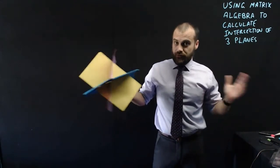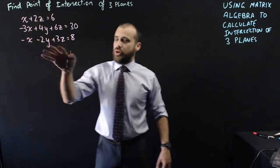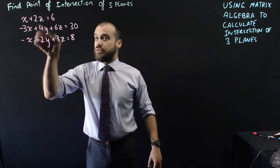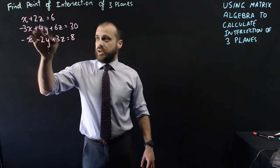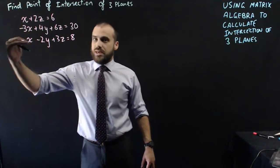Doing this is really straightforward, you've actually done it before. So we have three planes here. Now you'll notice straight away that this doesn't have three variables in it. It doesn't matter, it's just 0y in there. But these are three planes.